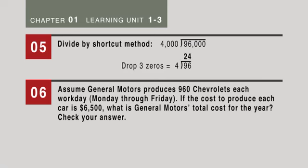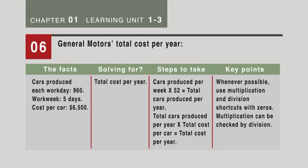In question number 6, General Motors produces 960 Chevrolets each workday. If the cost is $6,500, what's the total cost for the year? Our first step: cars produced each workday is 960, a work week is 5 days, and the cost is $6,500. We're looking for the total cost per year.